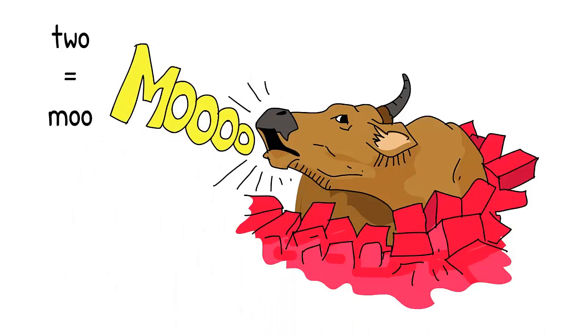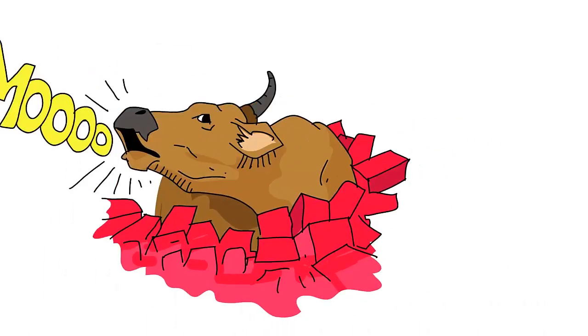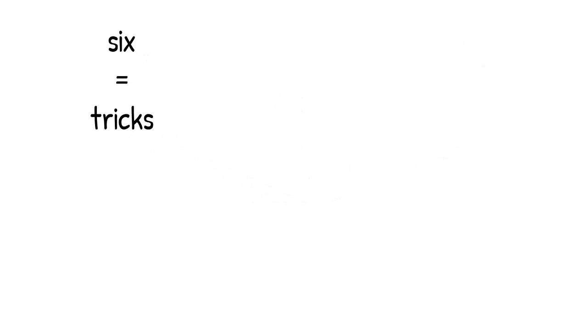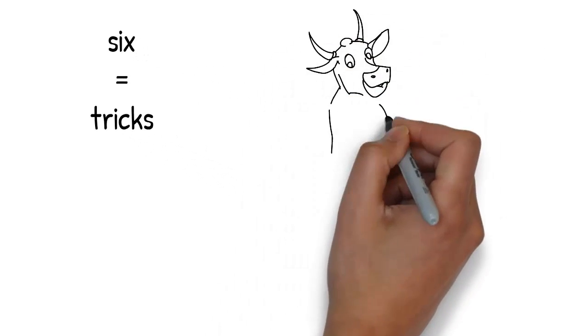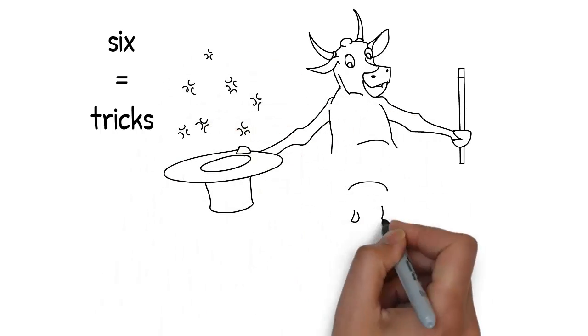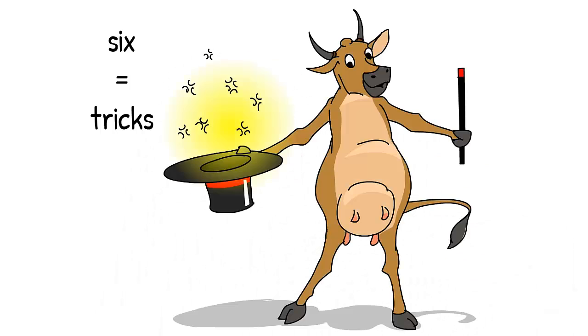Moo rhymes with 2. The cow climbs out of the bricks, pulls out a magician's hat and wand, and begins doing some tricks. Tricks rhymes with 6.